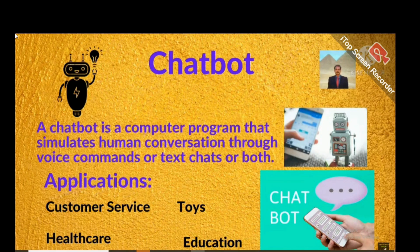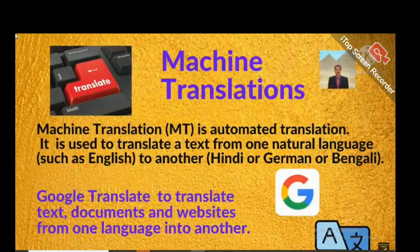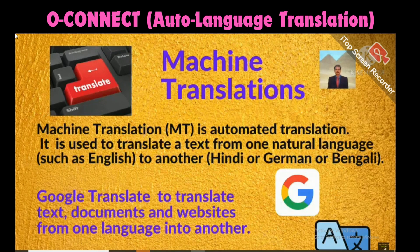Machine translation — what is machine translation? It translates text from one language, such as English, to another — Hindi, German, Bengali, or whatever language you want. This is automated translation. The best example is Google Translate, which translates text, documents, and websites from one language to another.